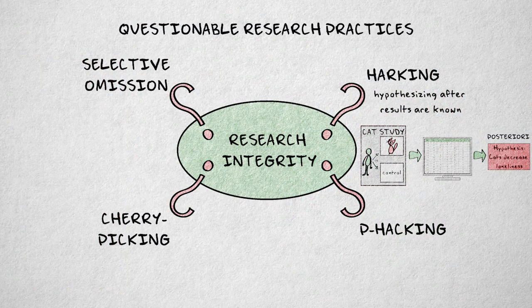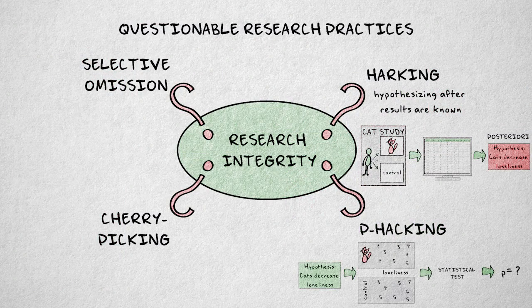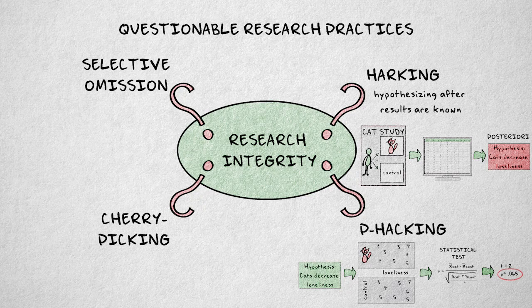Let's turn to the questionable research practice of p-hacking. A statistical test is often used to determine whether an effect, a difference between groups, or a correlation between variables, is large enough to be considered a confirmation of the hypothesis. In most cases, a probability called a p-value is used to decide this issue, hence the term p-hacking. P-hacking refers to data manipulation or selection that makes the results — in effect the p-value — more favorable.